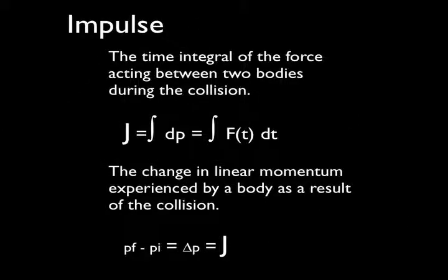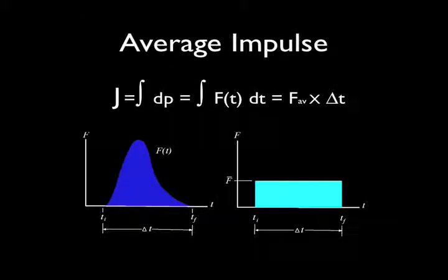The integral of the force acting between the two bodies during the collision can be shown to be the change in linear momentum experienced by the bodies as a result of the collision. This change in momentum is defined in physics as an impulse. Since the average force times the time of the interaction is the same as the integral of the force over the time of the collision, the PulseStar reports only the average force during the collision.